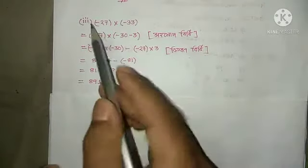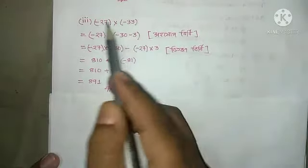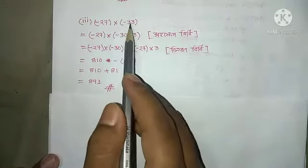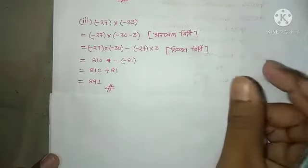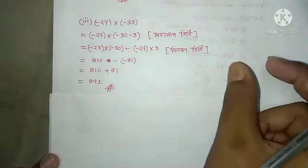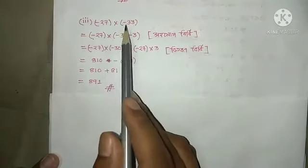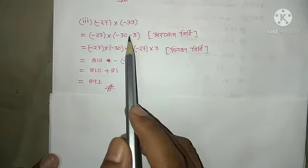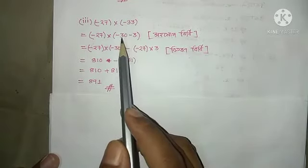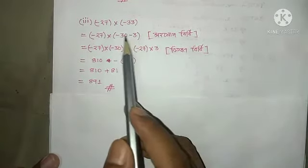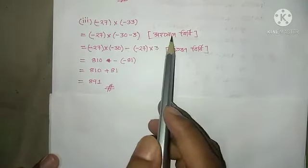Number two: minus 27 into minus 33. We break down minus 33 as minus 30 plus minus 3. So minus 27 into minus 30, plus minus 27 into minus 3.